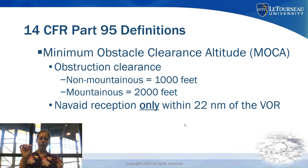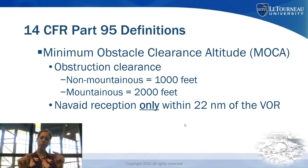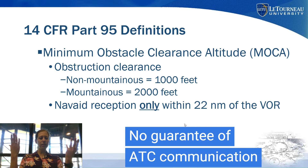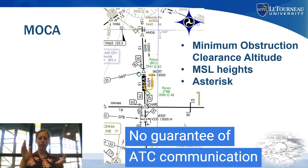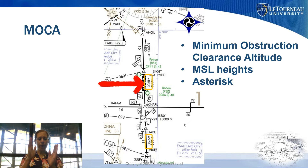Let's talk about the MOCA — the Minimum Obstacle Clearance Altitude. It provides the same obstacle clearance as the MEA, but it only guarantees reception of ground-based nav aids within 22 miles of those VORs. It also does not guarantee the ability to communicate with ATC. On a chart, it is denoted by an asterisk right in front of the altitude, and you can see it is below the MEA.